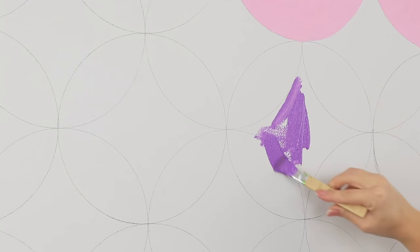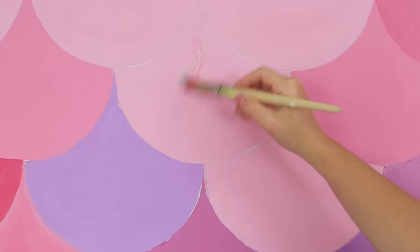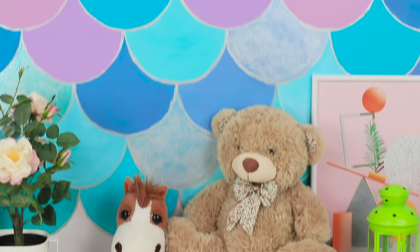Paint the scales in different colors. Go over the lines with silver paint. Now you know what the tail of a rainbow mermaid looks like! A great option for a girl's room!